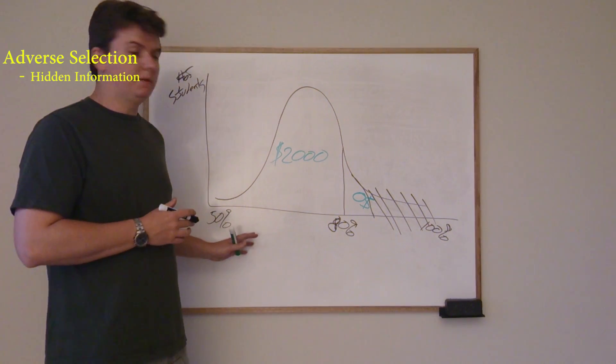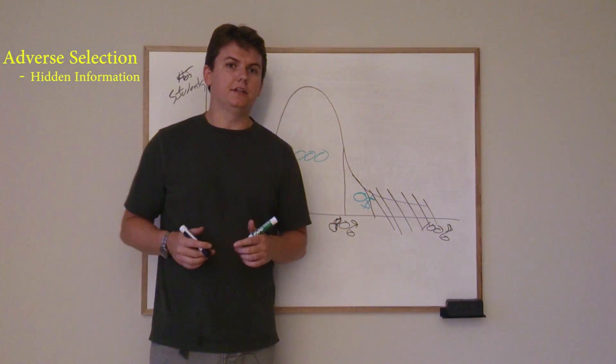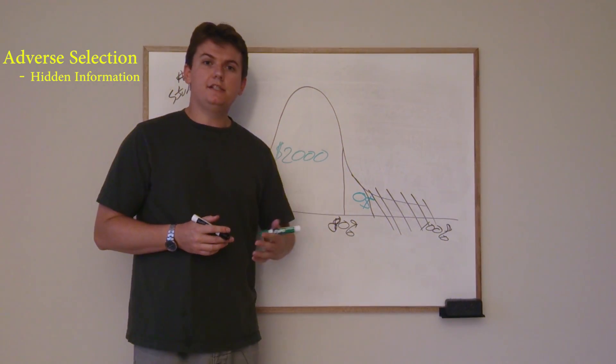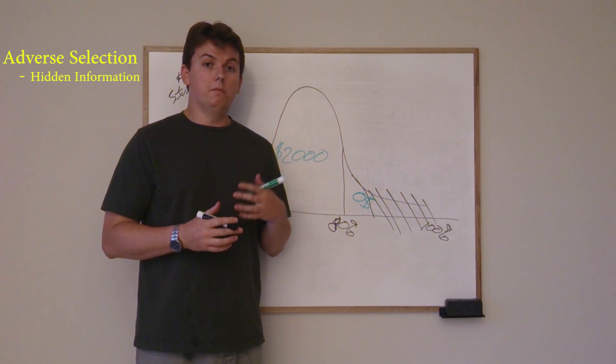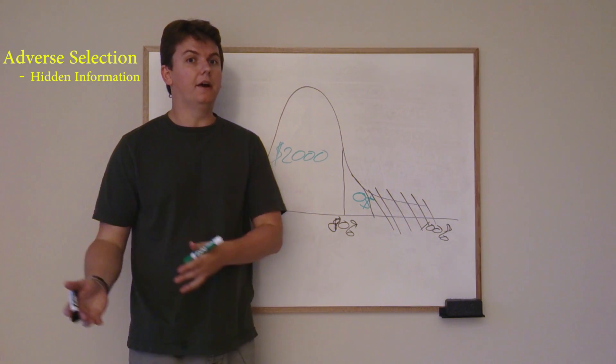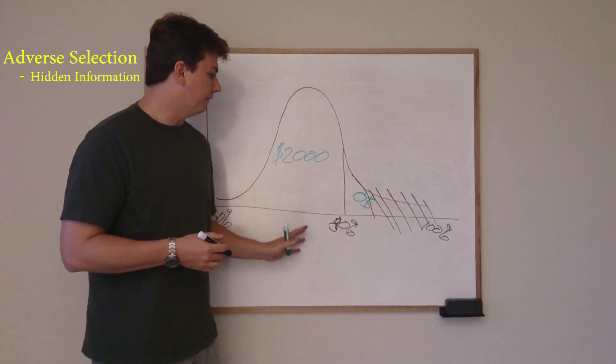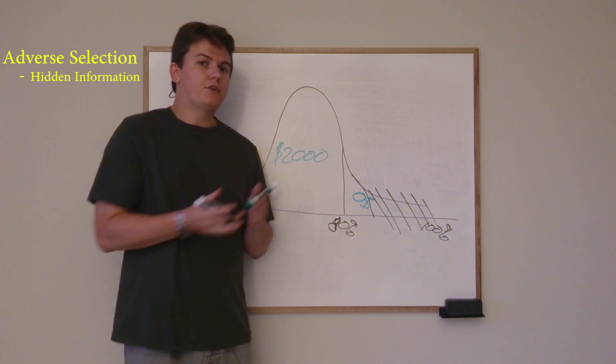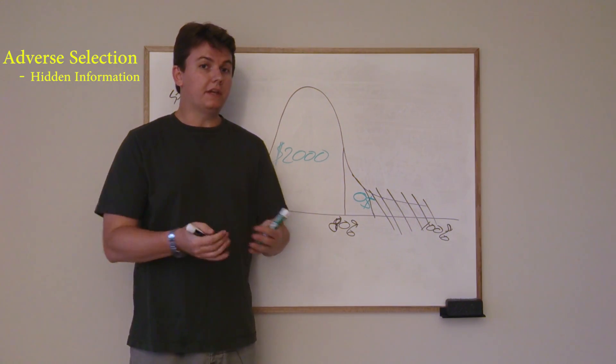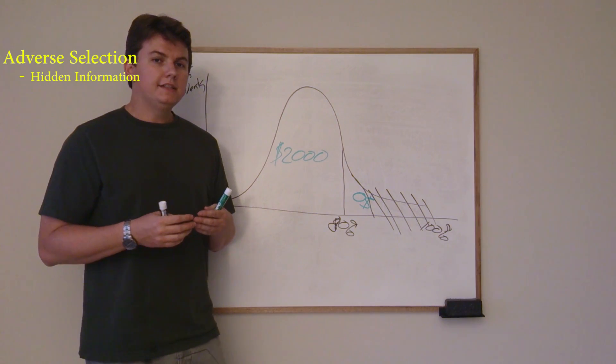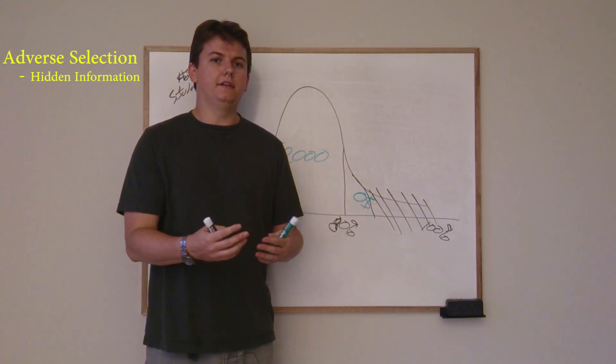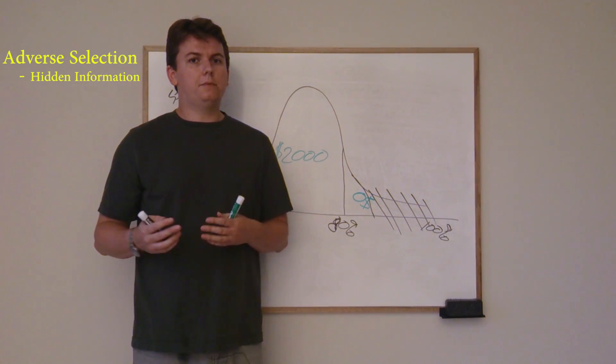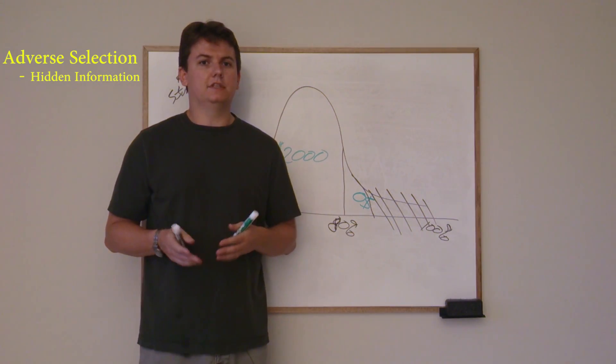But it's always the people that need it the most, and that is the adverse selection. It's the tendency of the people that need a safety net the most to seek it out. This is the same problem that you're going to run into with people with pre-existing conditions trying to get health insurance. I mean, if they can hide the fact that they have this condition to get in and get the insurance, then it's good for them. But for the insurance company, that is the problem of adverse selection.